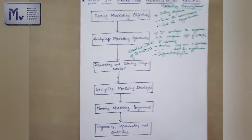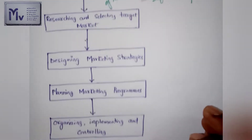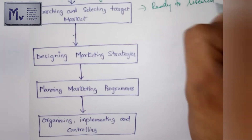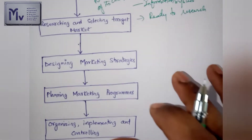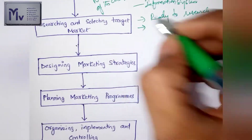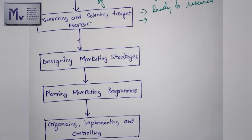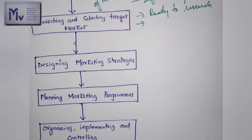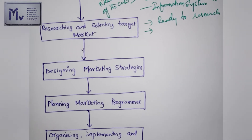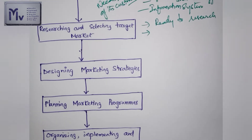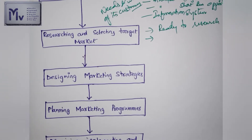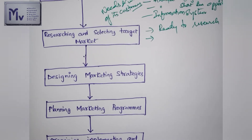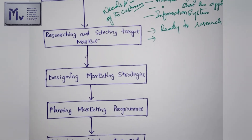The third step is researching and selecting the target market. The firm is now ready to research and select markets. It needs to know how to measure the attractiveness of any given market. Marketing people must understand the major techniques for measuring market potential and forecasting future demand. This measurement and forecasting will become the key in deciding which markets and new products to focus on.